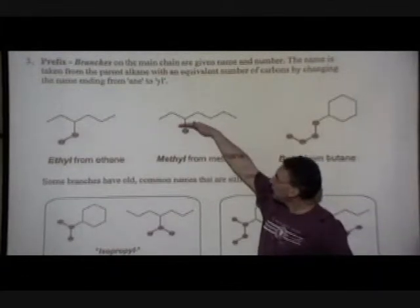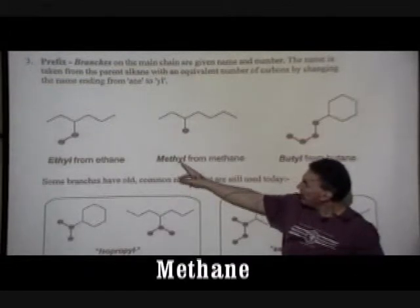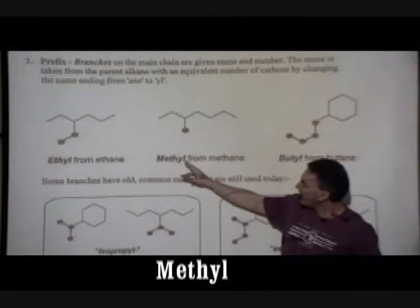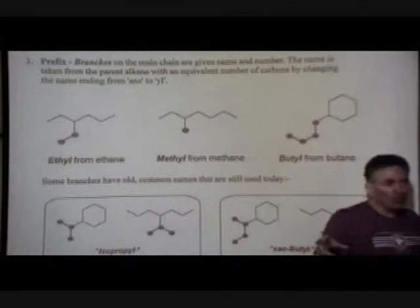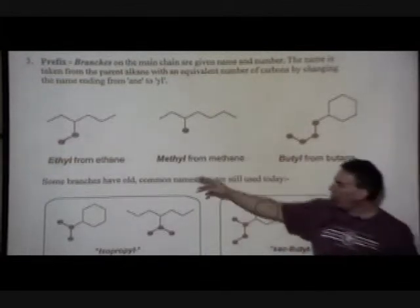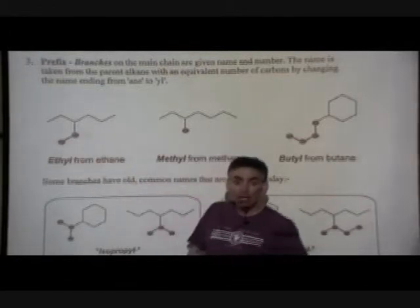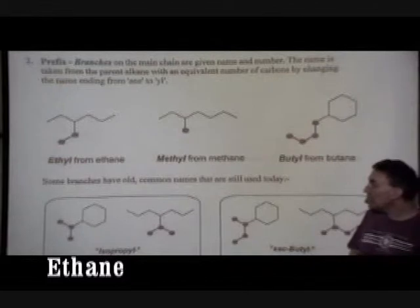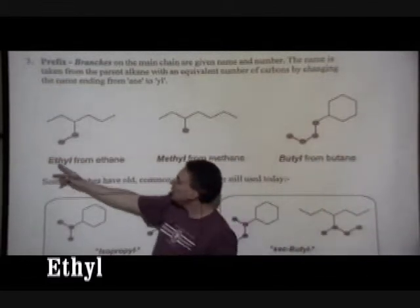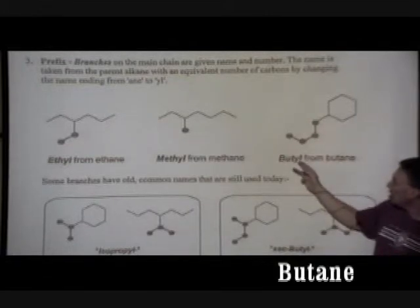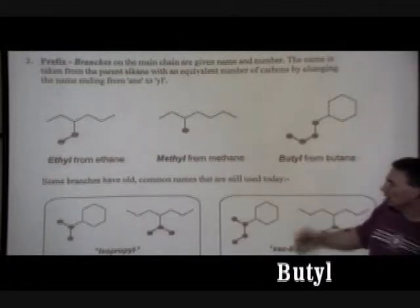One carbon in the branch is based on methane. We change the name ending - we take off the '-ane' and put on '-yl' instead, so we can distinguish a branch from the core trunk. If it has a '-yl' ending, then that's one of the branches. If the branch had two carbons, it's based on ethane - so ethane becomes ethyl. Four carbons in the branch is based on butane: take off the '-ane' and it changes to '-yl', so it's a butyl branch on the molecule. The name of the branch is based on the parent alkane.